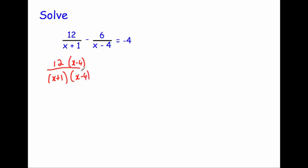Next, we write our subtraction and times both the numerator and denominator of the second fraction by the denominator of the first fraction. So we've got our 6, and the denominator x minus 4 — because there are two terms, I put that in a bracket. We times both of these by x plus 1, and because x plus 1 is two terms, we put that in a bracket too: x plus 1 on the top and x plus 1 on the bottom.